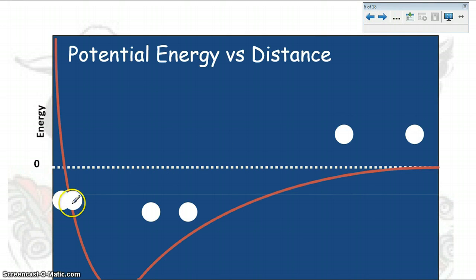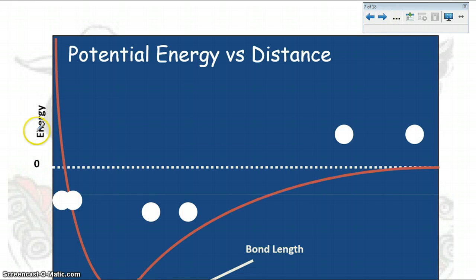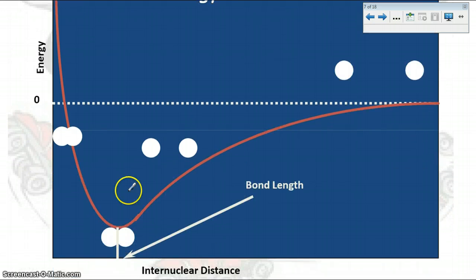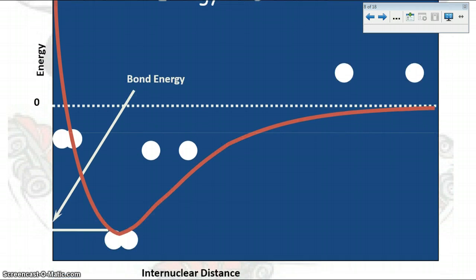When they get too close together, the energy rises back up. So far apart is low energy, getting a little closer gives even lower energy, all the way down to the minimum — and then if they get too close, the energy starts to go back up. There is a balance. The internuclear distance at that minimum on the graph is read right here — this is the bond length on the graph.